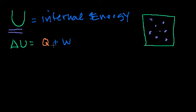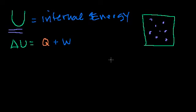Like I said in the last video, sometimes they'll say plus the work done on the system, and sometimes they'll say minus the work that the system does — either way. I want to make a side discussion here, because I decided to write the equation without the little deltas. The reason why is it clears up in my mind what heat and work are relative to internal energy.